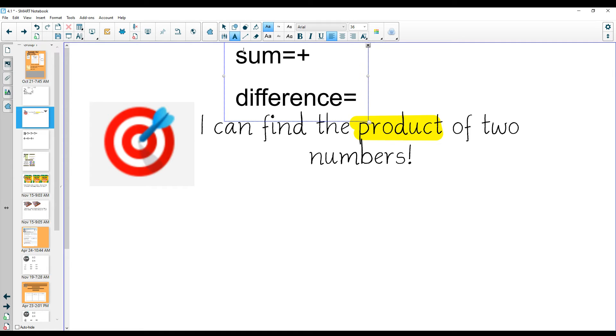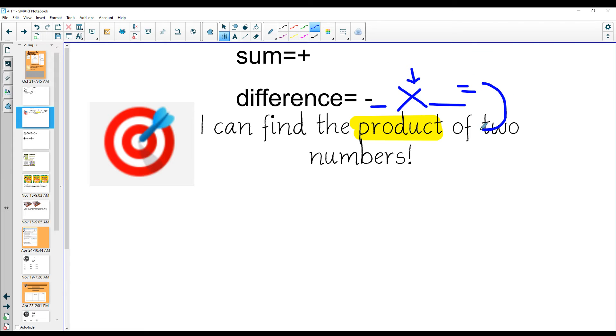So if sum is plus, difference is minus, what do you think product is? You may have guessed it. It means multiply. When I take two numbers and multiply them together, they equal the product.